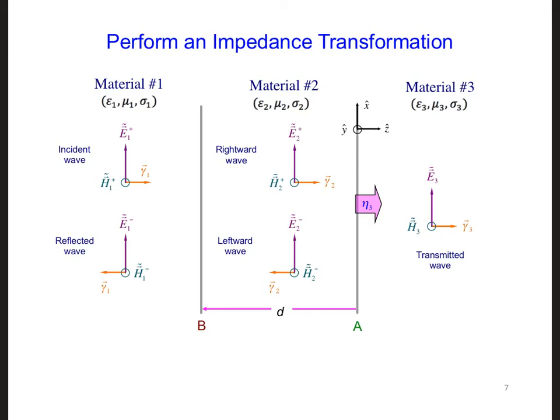We are transforming the impedance through material number 2, so we're going to have to normalize using eta 2. We would take eta at A minus, right here, eta in, input impedance, divide by eta 2. That's the same as saying eta 3 divided by eta 2.